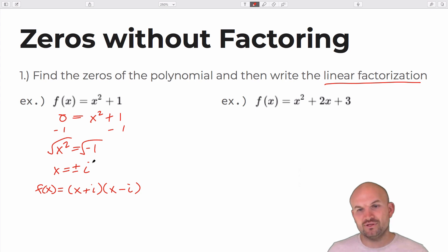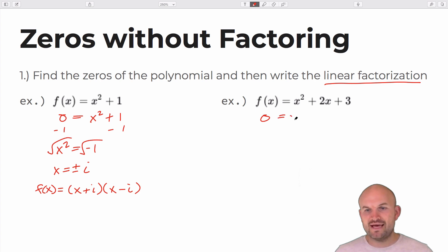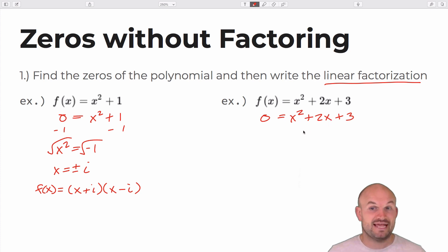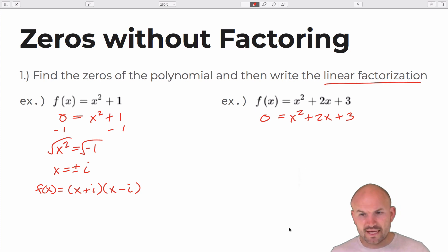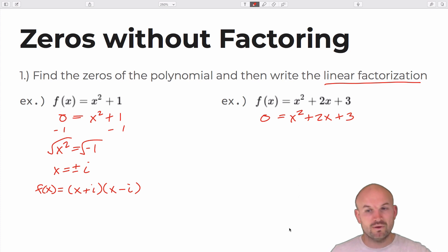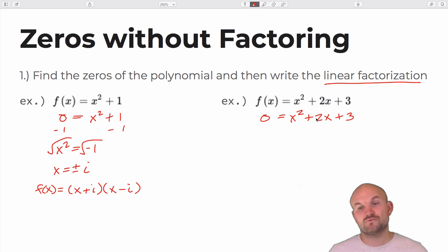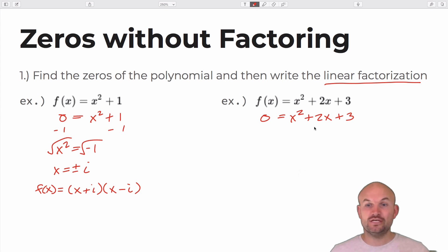For the next example, we don't want to make the mistake of subtracting three and then taking the square root, because we have two values — an x squared as well as an x. So we can't do that in this case. However, we do have a quadratic equation equal to zero. If it's non-factorable — there are no two numbers that multiply to give us three and add to give us two — then we can use the quadratic formula.